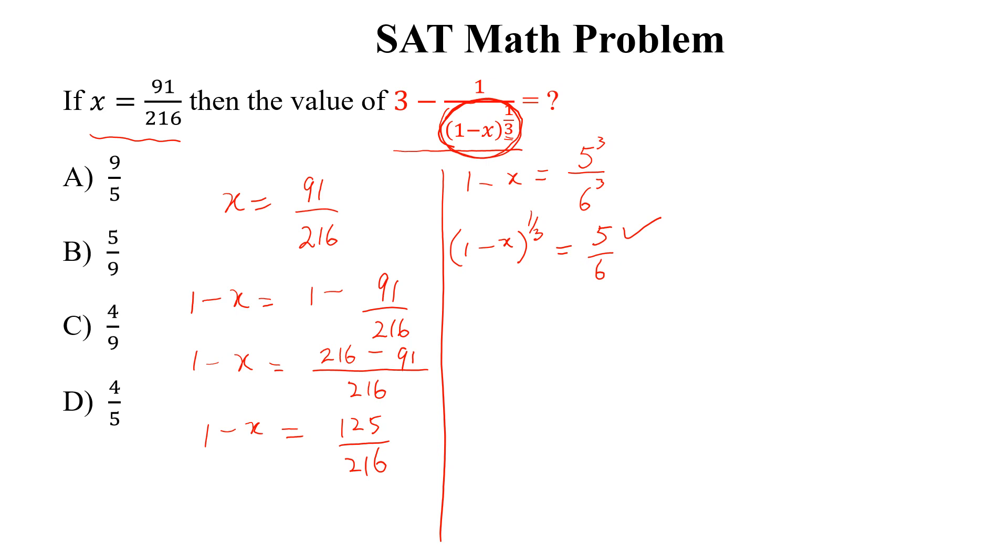Now the question is simple. 3 minus 1 over (1 minus x) to the power 1/3 equals 3 minus 1 over 5/6. The value of this is 5/6.